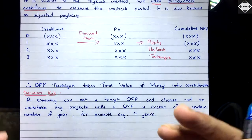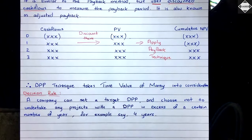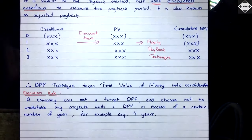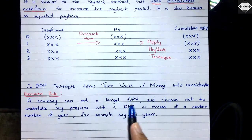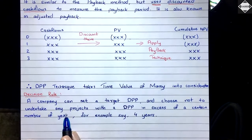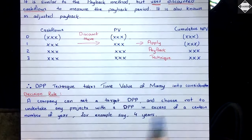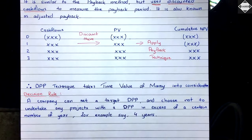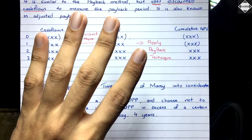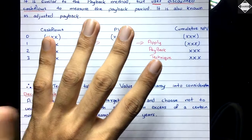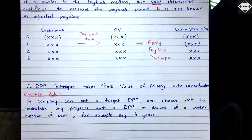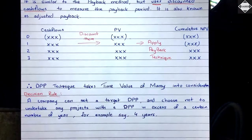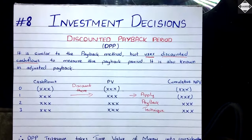The decision rule is the same: if we have many projects, select the one with the shortest payback period — the sooner we get our money back, the better. Sometimes management will give a target DPP — a company can set a target discounted payback period and choose not to undertake any project with a DPP in excess of, say, four years. If any project exceeds that target, you must reject it.